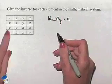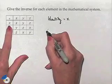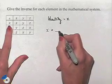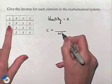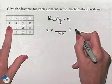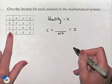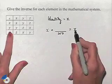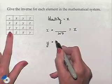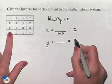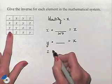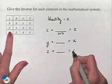To find an inverse, we're going to start with each element, put it together with its inverse, and come up with the identity, which is going to be x. So we're going to have to have x put together with its inverse equal to x, y put together with its inverse equal to x, and z put together with its inverse equal to x.